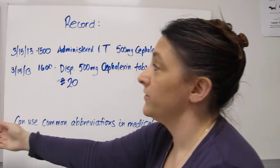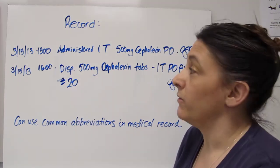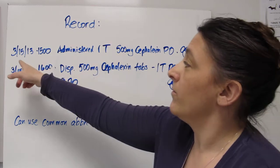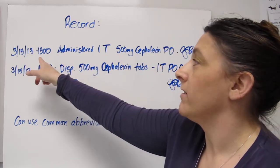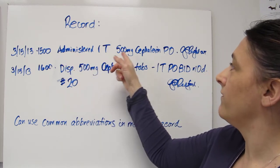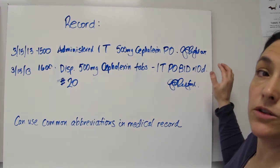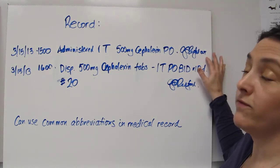So once you have done either of those you need to make sure that it's written in the record. So here's our record. We gave it today at three o'clock. We're going to administer one tablet of 500 milligrams of Cephalexin PO and then your initials or your full name.